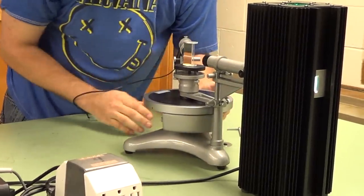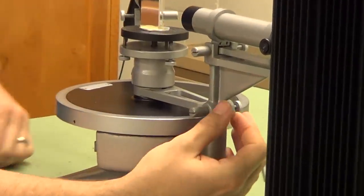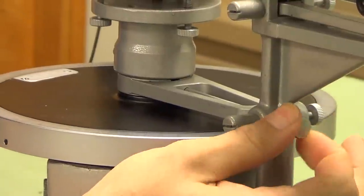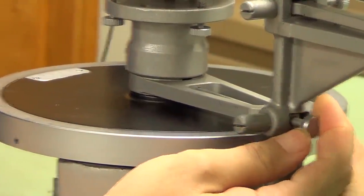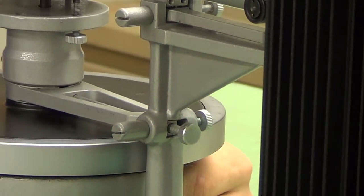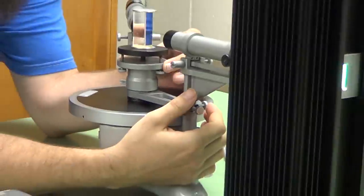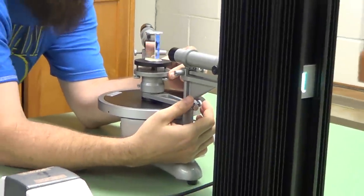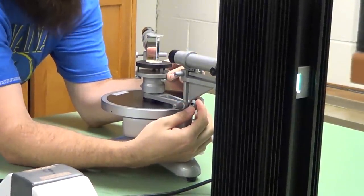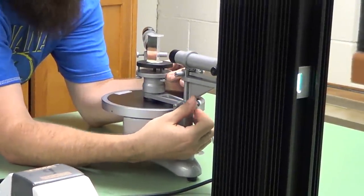The third and final screw that we'll be using is behind the collimating telescope. And that one unlocks the stage so that you can rotate the prism, and then tighten it down to lock it in place.